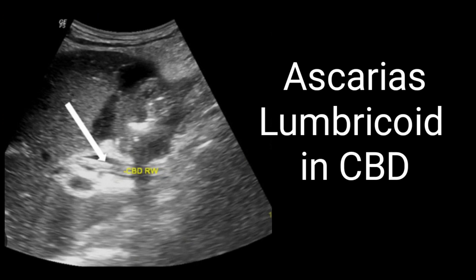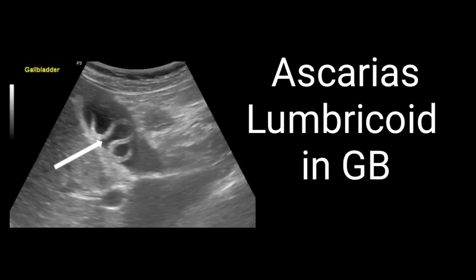Another infection is Ascariasis. A single Ascaris lumbricoides worm is identified as a tubular structure with parallel echogenic lines within the bile duct. On this image you can appreciate the echogenic parallel lines within the CBD — this is Ascaris lumbricoides within the CBD. Sometimes Ascariasis can be seen within the gallbladder as well. Mention on the report that an echogenic tubular structure is seen either in the gallbladder or within the CBD, and that the findings are suggestive of Ascaris lumbricoides — clinical and laboratory correlation is also suggested.